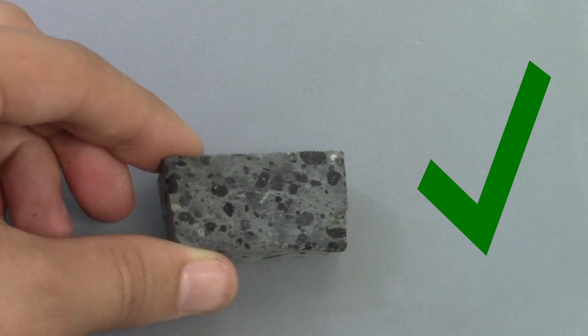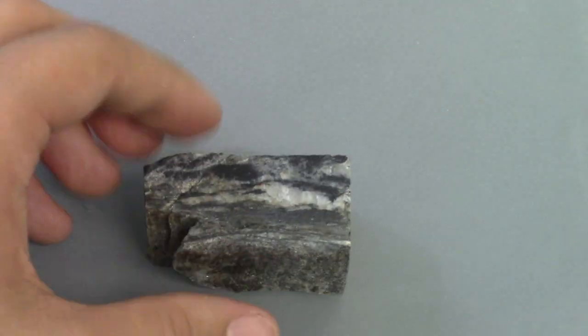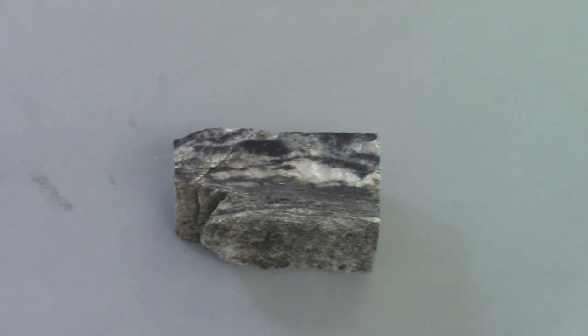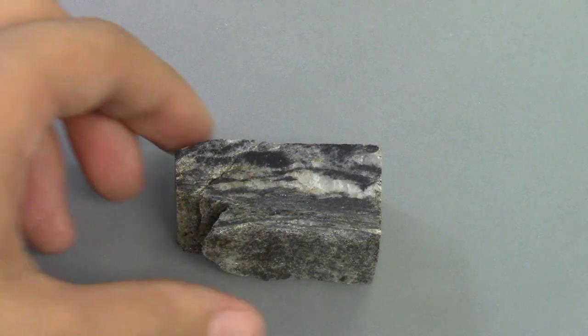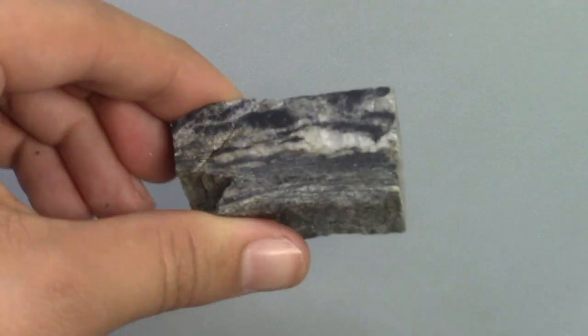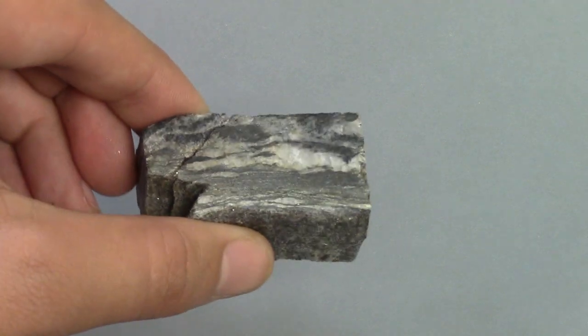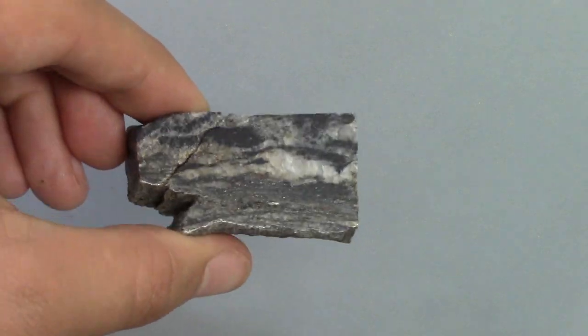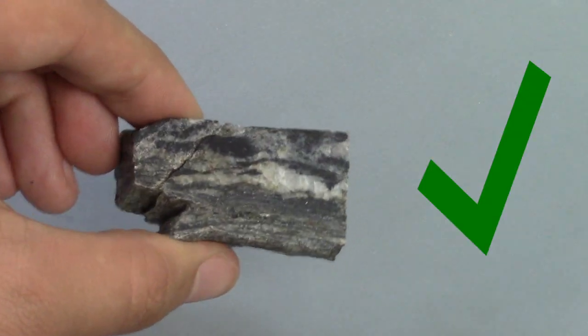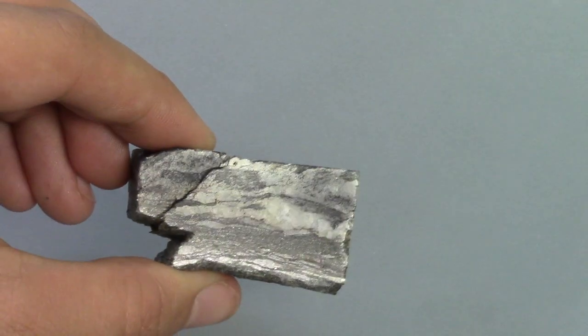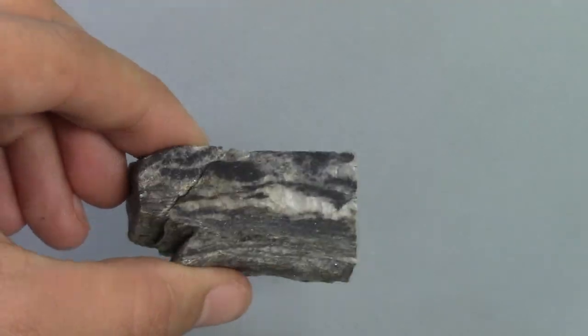We'll show another example. This is a metamorphic rock, it's foliated, it looks a little bit different. But again, if we pick it up and tilt it, you should be able to see that it's pretty much shiny all the way across. That's a good indication that you've gotten most of it polished.